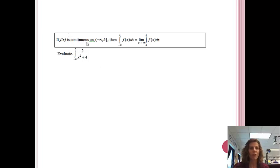If f of x is continuous on the interval from negative infinity to b, then the integral of negative infinity to b of the function is equal to the limit as a approaches negative infinity of the integral from a to b of f of x dx. That sounds pretty wordy. Basically, what we're going to do is replace the negative infinity with an actual letter, and we're going to let that letter approach negative infinity when we are done.